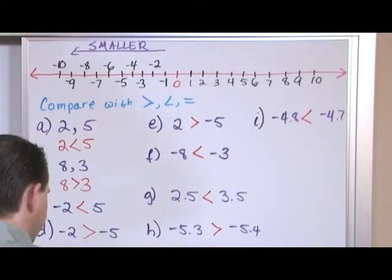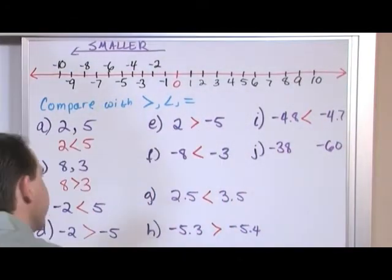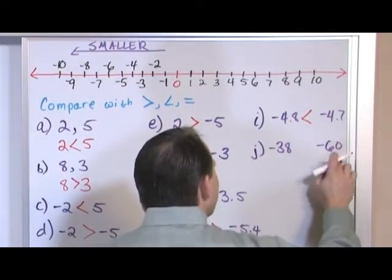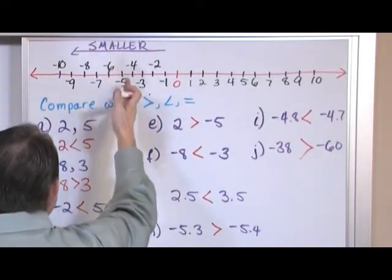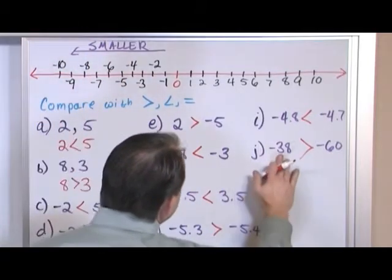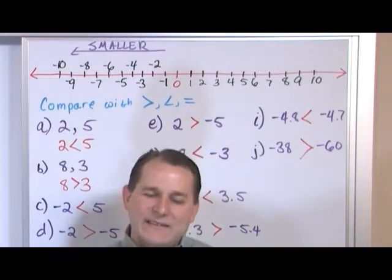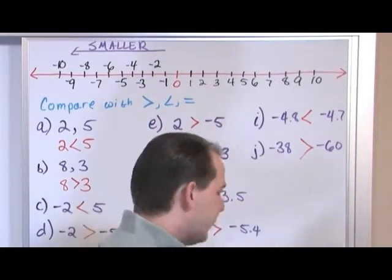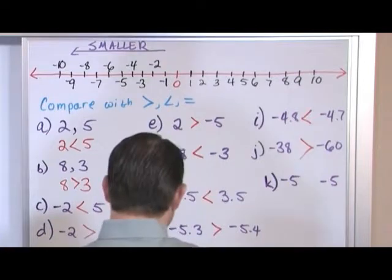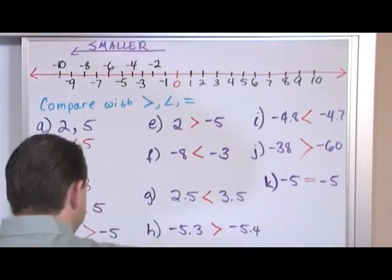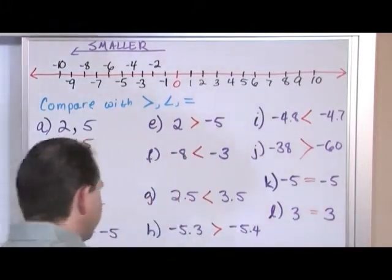For J, negative 38 and negative 60: even though 60 is a bigger number, it's actually smaller because it's negative — it's farther in the hole, like owing more pieces of gum. The arrow points to negative 60. For K, negative 5 and negative 5: these are exactly the same, so they're equal. And 3 and 3 are of course equal too — not greater than or less than, just equal to. I just want to put that in for completeness.